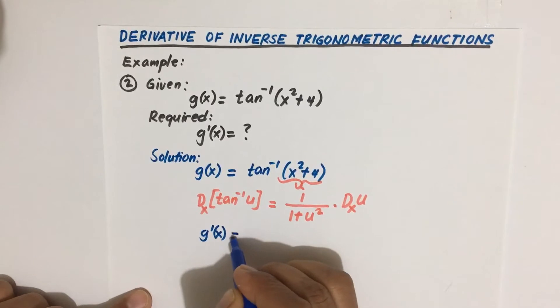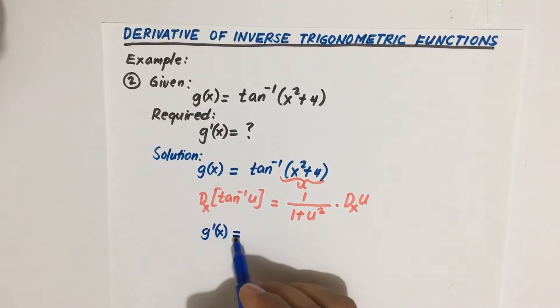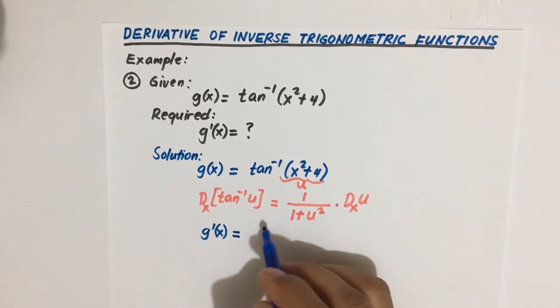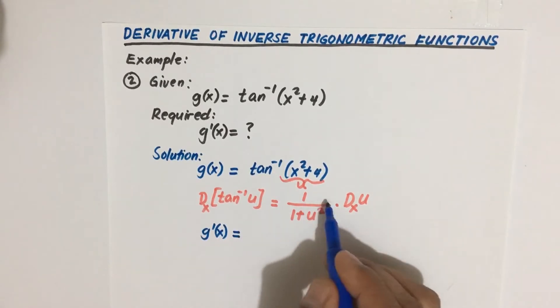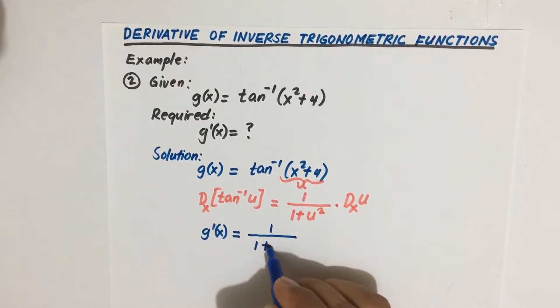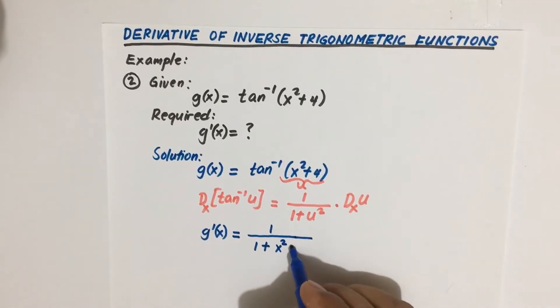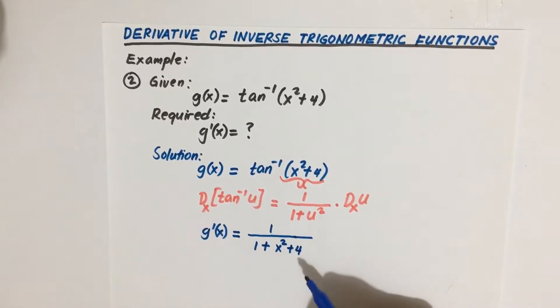g prime of x or the derivative of g of x which is inverse tangent of x squared plus 4. So we have using this formula, we have 1 divided by 1 plus u. But what is our u? Our u here is x squared plus 4, and take note our u is being squared, so